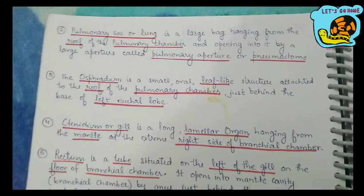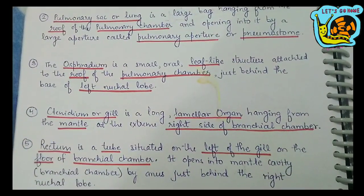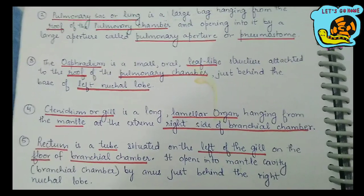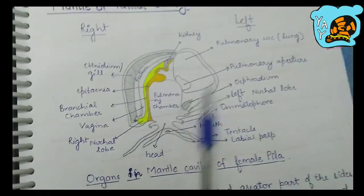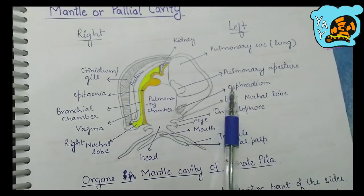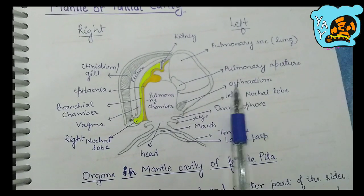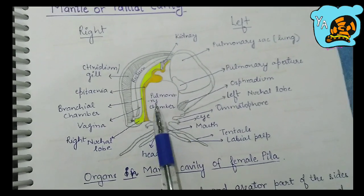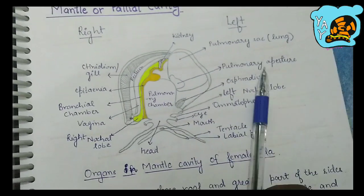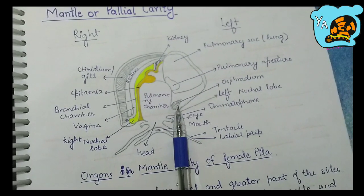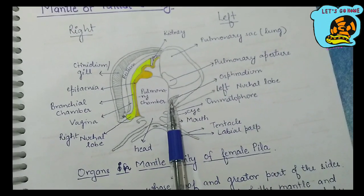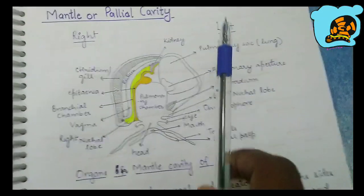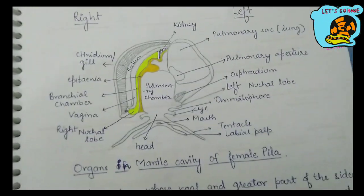The next structure is the ospheridium. It is a very small, oval, leaf-like structure attached to the roof of the pulmonary chamber, just behind the base of the left nuchal lobe. In the diagram, this structure on the left side of the body represents the ospheridium — a leaf-like structure present at the roof of the pulmonary chamber just behind the left nuchal lobe.